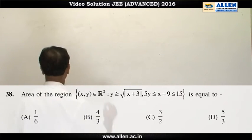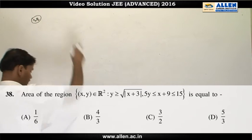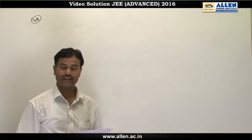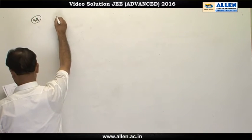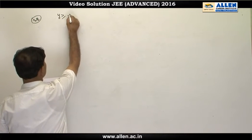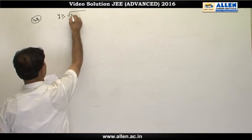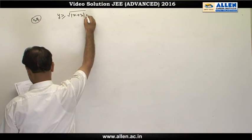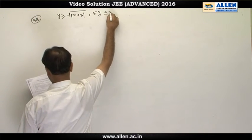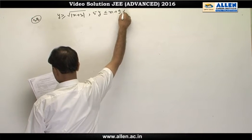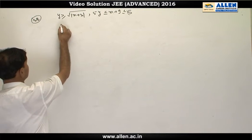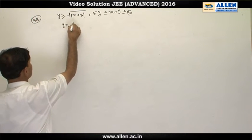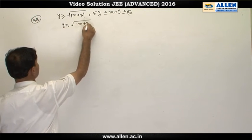Question 38: We have to find the area of the region formed by points on the xy-plane satisfying: y ≥ √|x + 3|, and 5y ≤ x + 9 ≤ 15. When we solve the first part, y ≥ √|x + 3|.